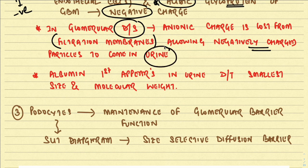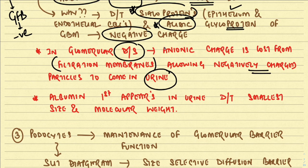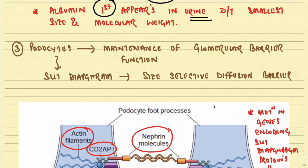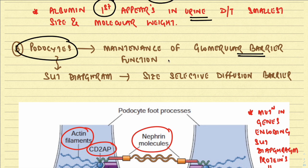When anionic charge is lost in glomerular disease, albumin starts appearing in the urine. Albumin is the first protein to appear in the urine because of its smallest size and molecular weight. The third important factor affecting permeability is the podocytes. Podocytes maintain glomerular barrier function through the slit diaphragm, which acts as a size-selective diffusion barrier between the foot processes.